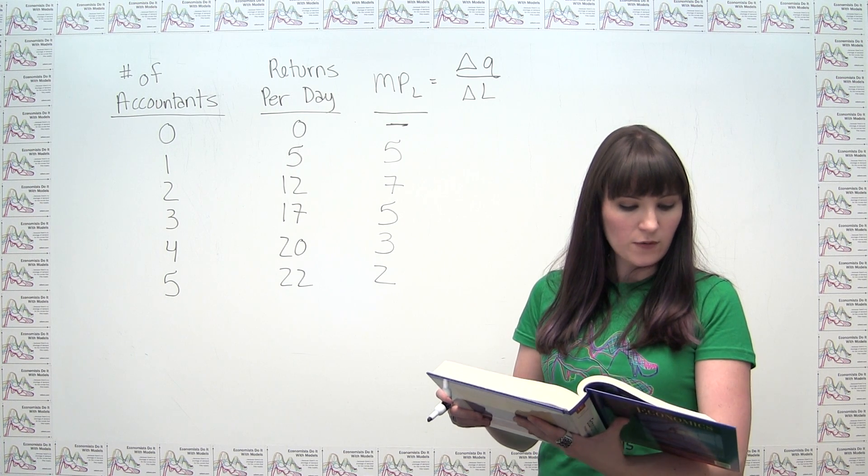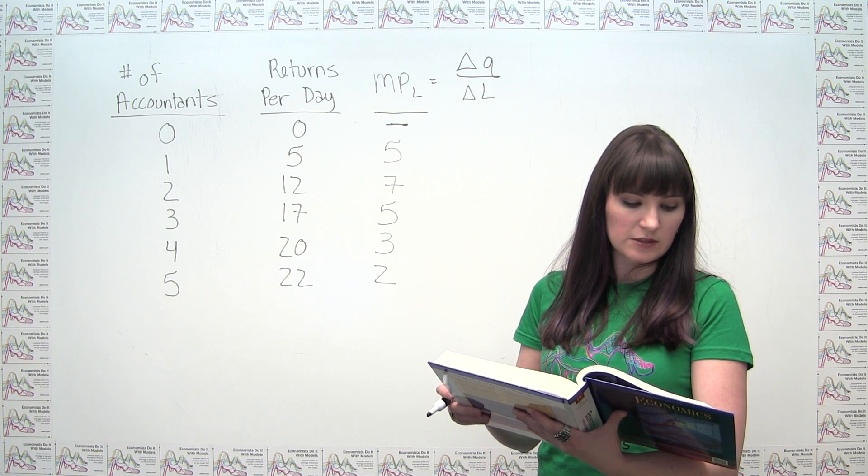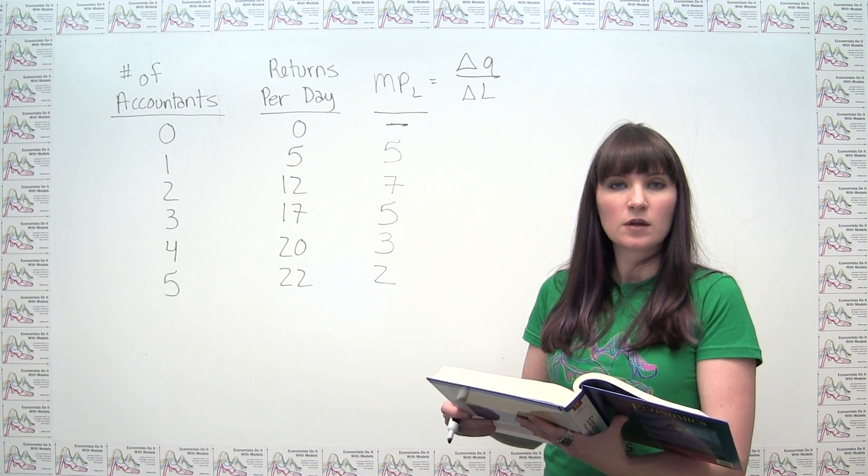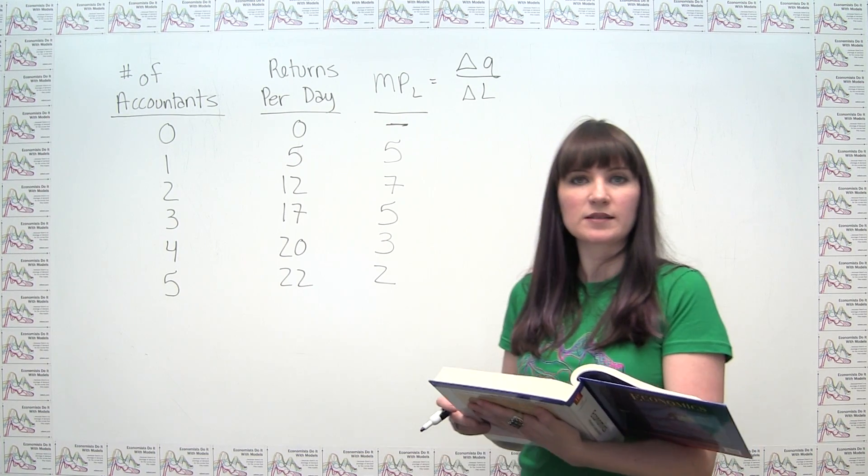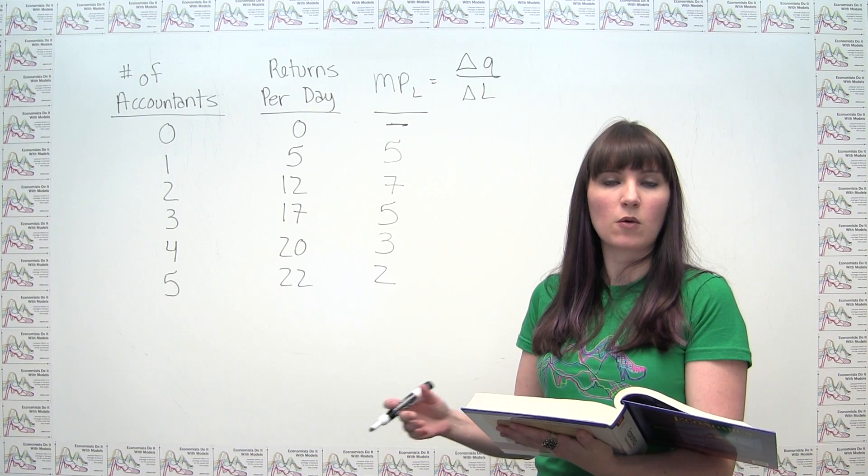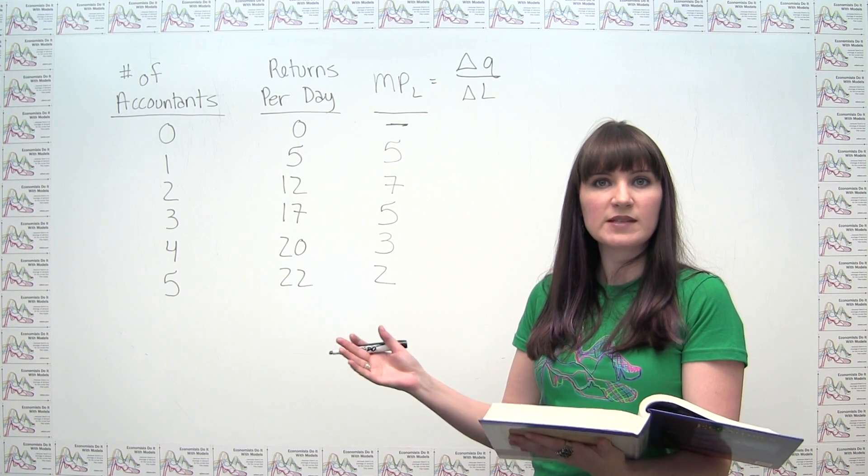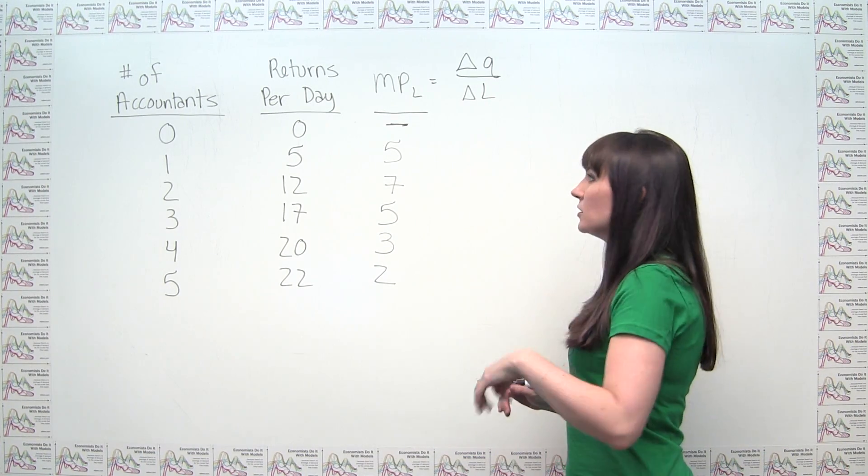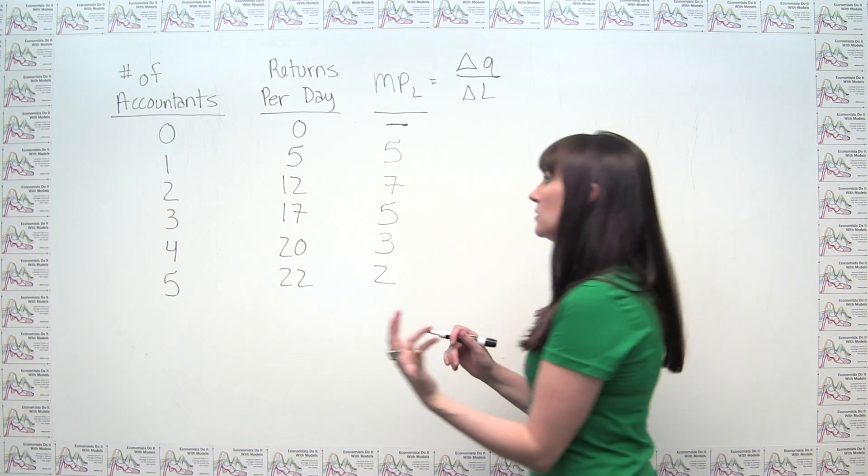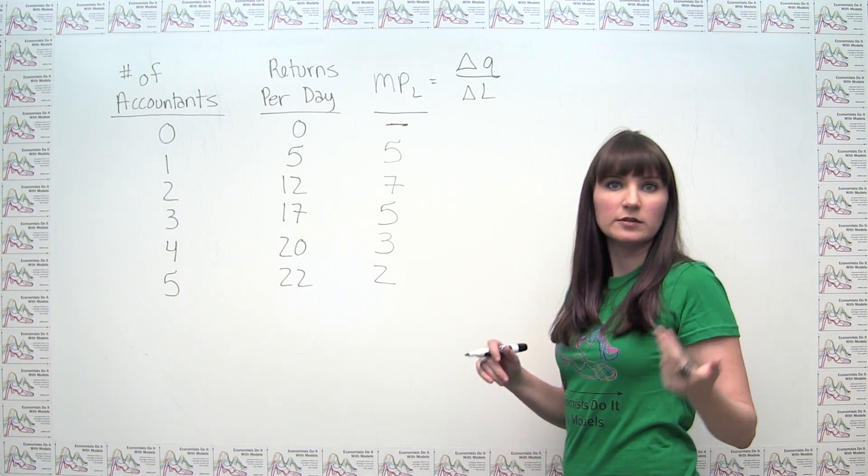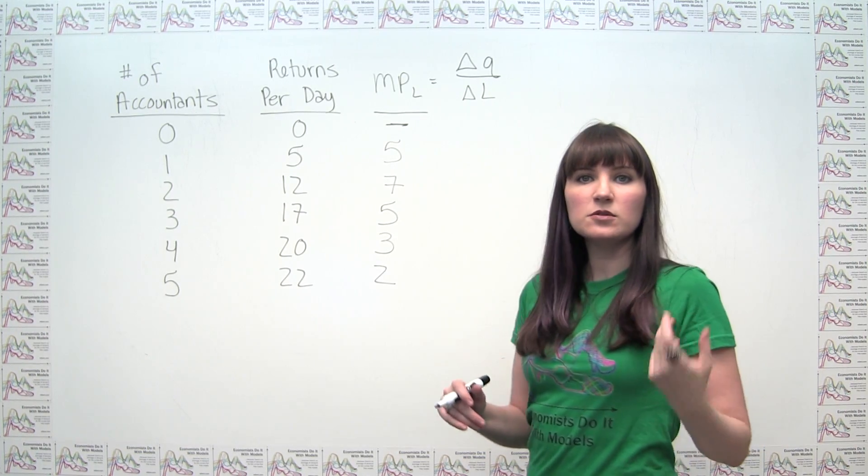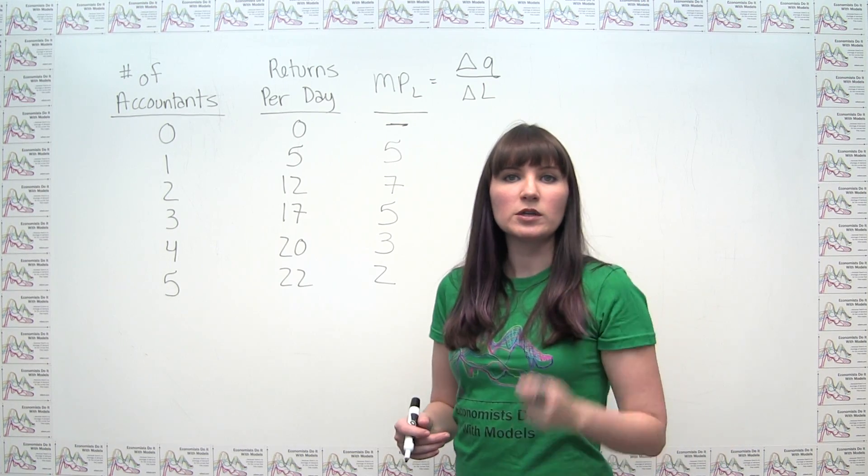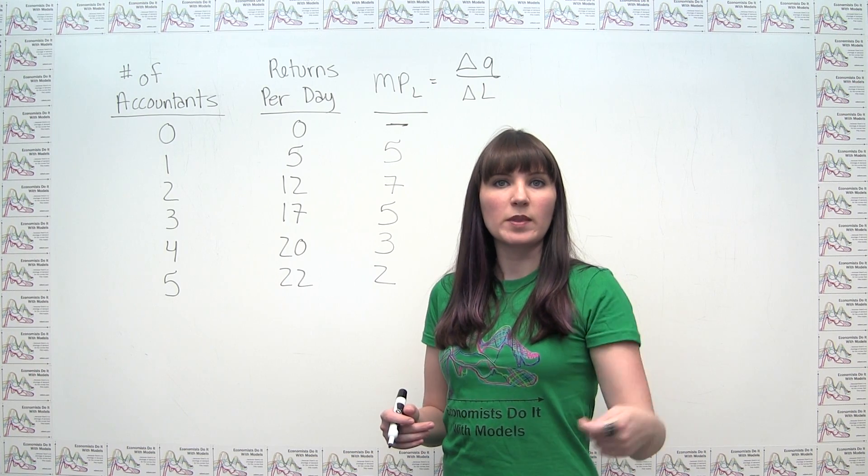Part B of the question asks, over what range of employment do you see increasing returns to labor, and what range do you see diminishing returns to labor? You can also think of this as diminishing marginal product of labor, or increasing marginal product of labor, same concept. We have increasing returns, or increasing marginal product of labor, when our marginal product numbers are increasing. What that means intuitively is each worker is actually incrementally more useful than the one that came before.